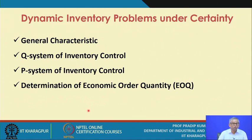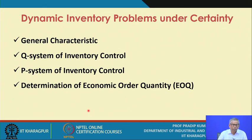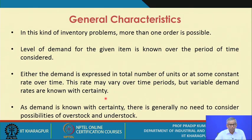Let us first talk about certain general characteristics of this kind of problem called dynamic inventory problem under certainty. Once the characteristics are known, we will explain in detail the working of two kinds of inventory control systems: the Q system and the P system of inventory control. Then we will explain in detail how to determine the economic order quantity or EOQ. This will be our coverage during the first lecture session.